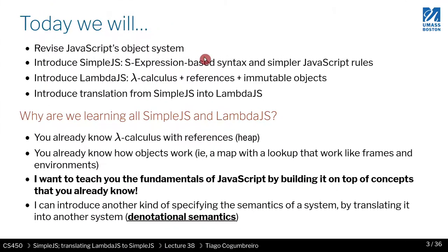Today we're going to revisit JavaScript's object system. I'm going to introduce SimpleJS, which is just the S-expression-based syntax of a small subset of JavaScript that we're going to support for homework 8. I'm going to introduce Lambda.js, which is just the lambda calculus basic homework 4 extended with references — heaps — and also immutable objects. Finally, we're going to cover translation from SimpleJS to Lambda.js, which is homework 8.